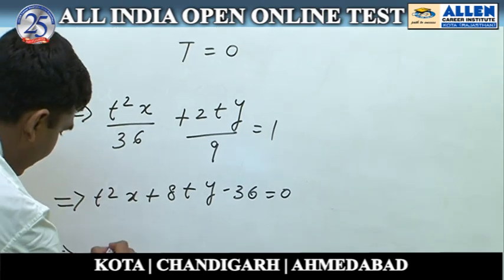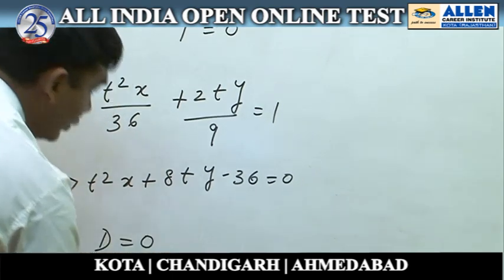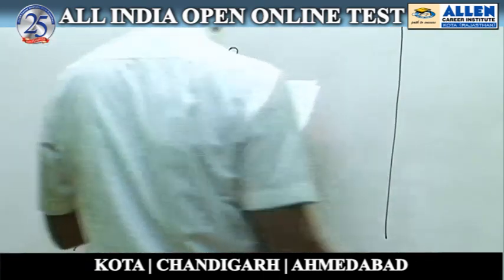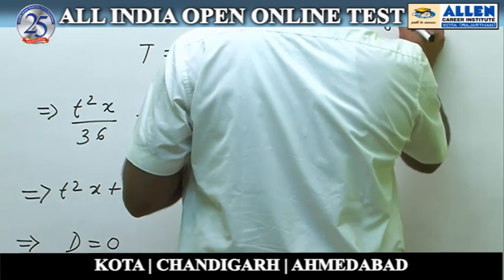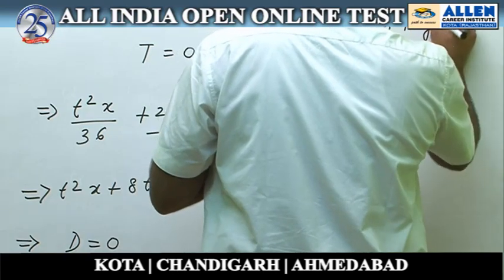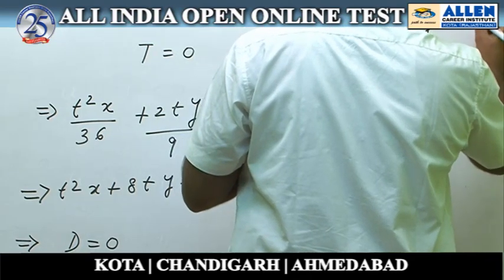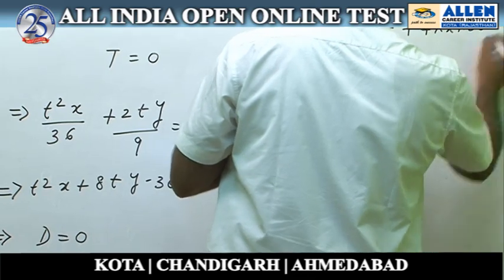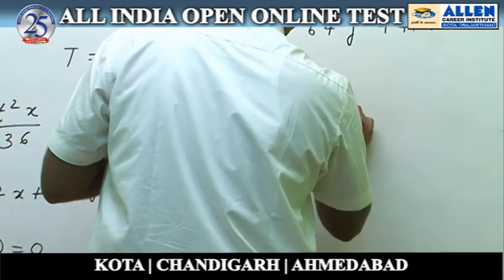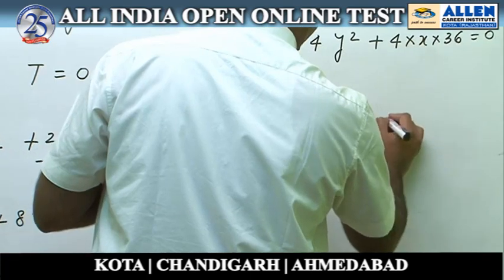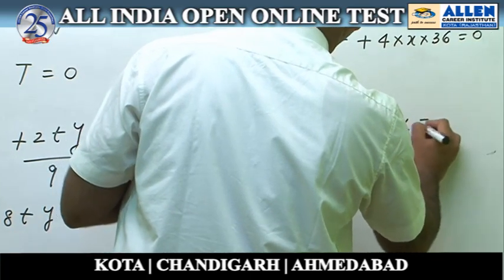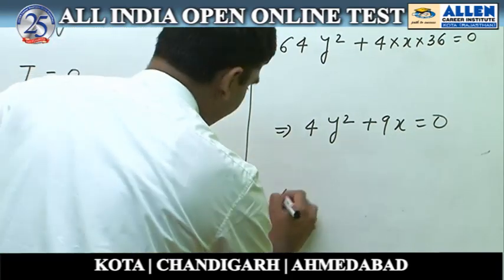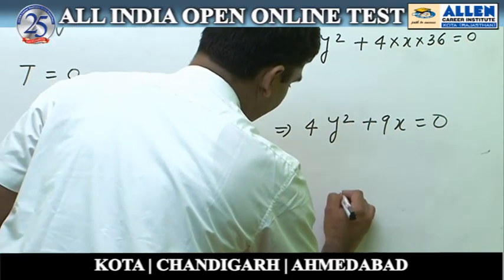For tangency, discriminant equals 0. This gives 64y squared plus 4 into x into 36 equals 0, implies 4y squared plus 9x equals 0, which is the required equation of the parabola. Therefore, answer is option number 1.